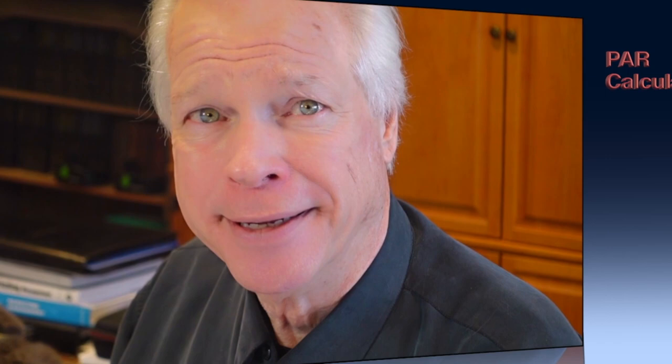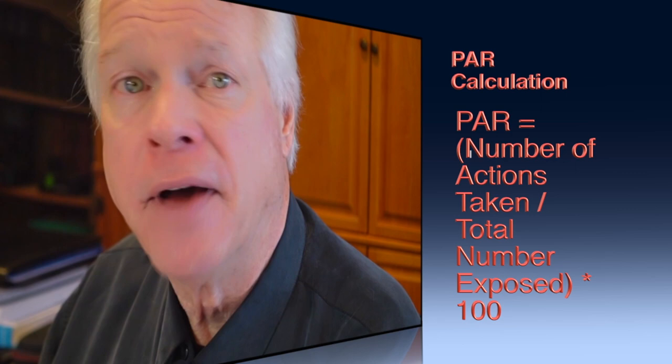Purchase Action Ratio is calculated by dividing the number of customers who take a specific action, such as making a purchase, by the total number of customers exposed to the marketing effort. The formula is: PAR equals number of actions taken divided by total number exposed, times 100.